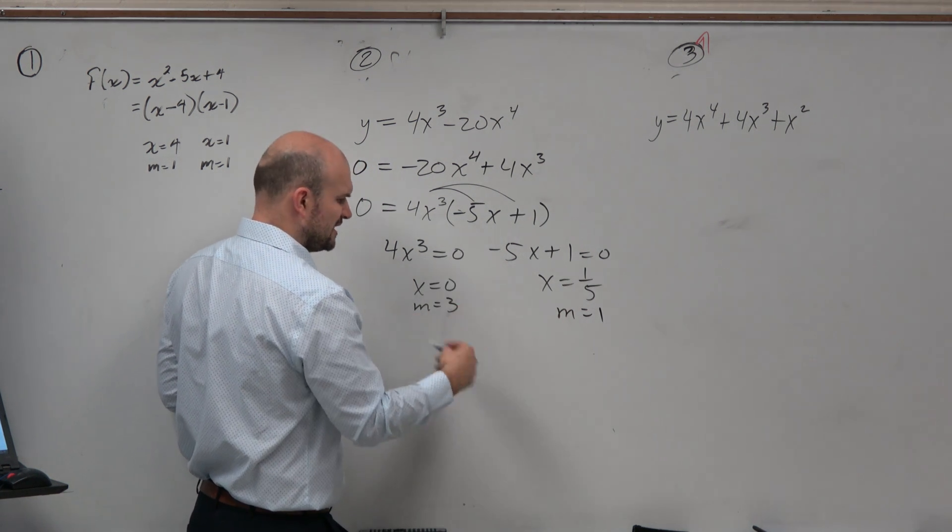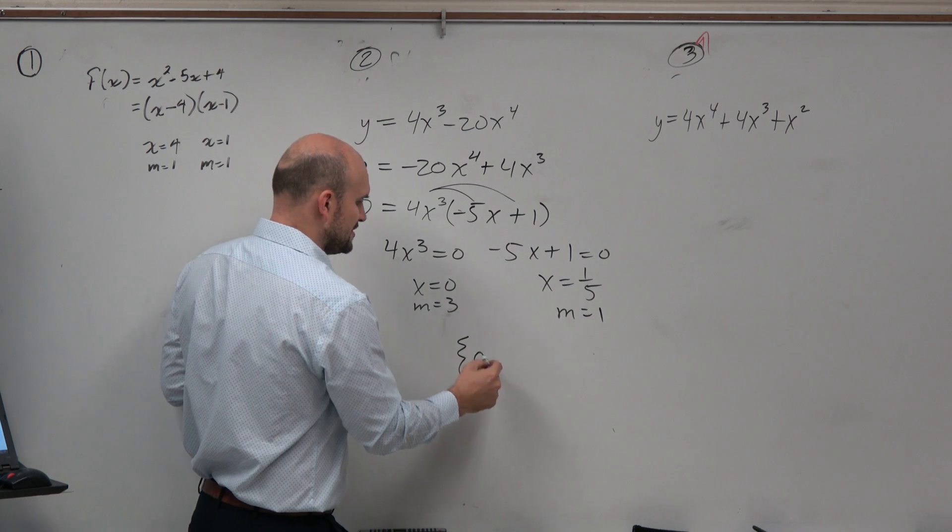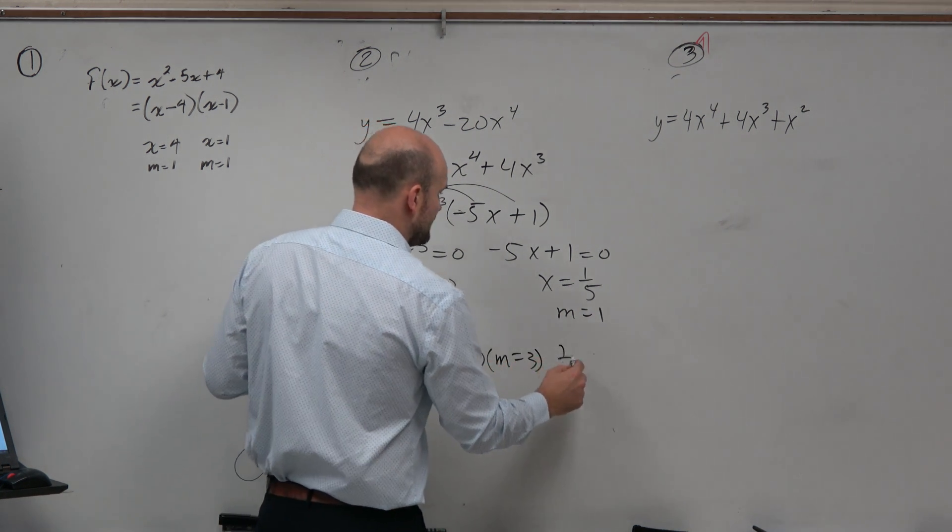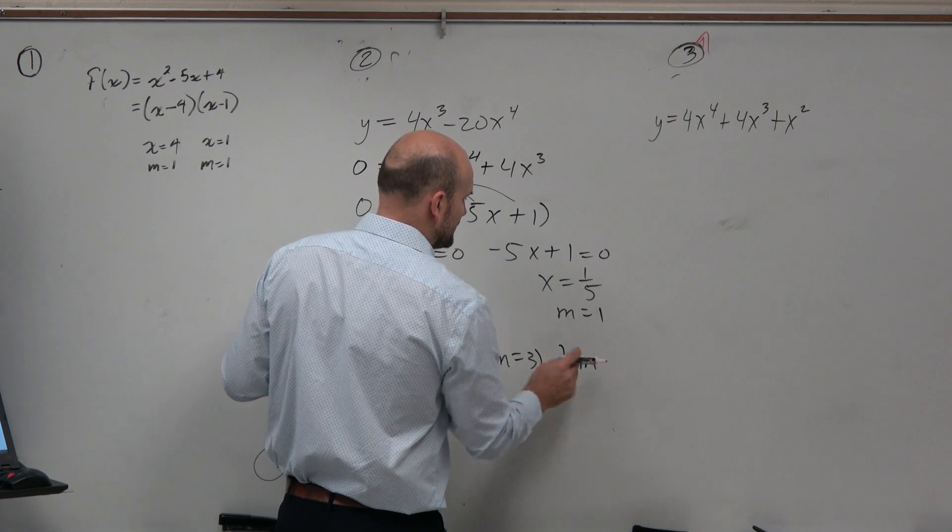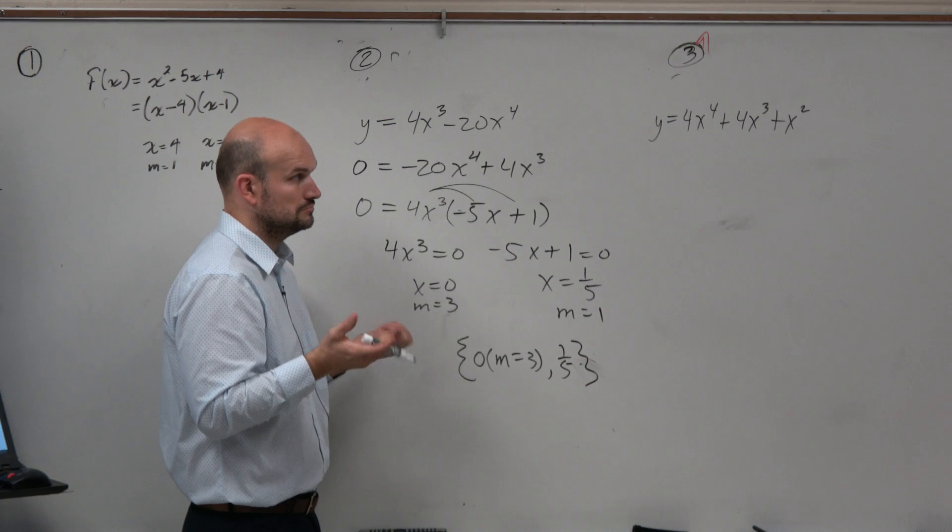I've already done a lot of this work, so that's why I'm not going to show step by step. So therefore, I'm just going to write 0 multiplicity equal to 3 and 1 fifth. You don't need to write 1. You can just leave it like that. And there we go.